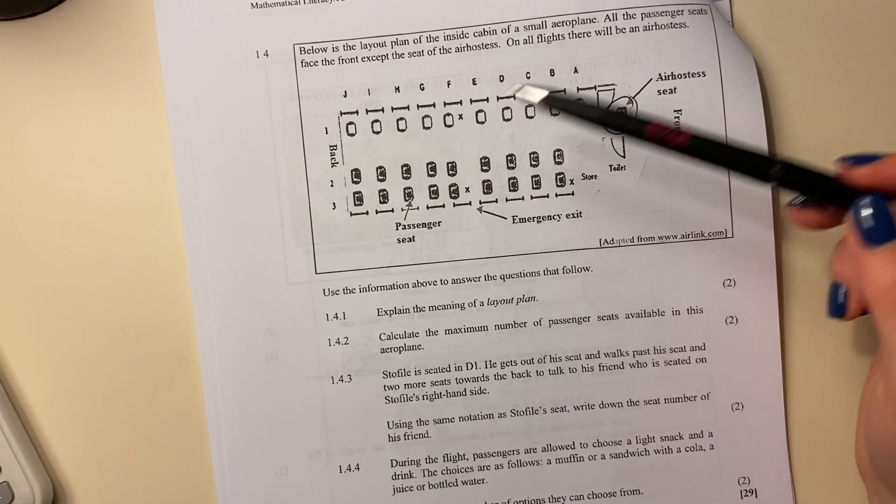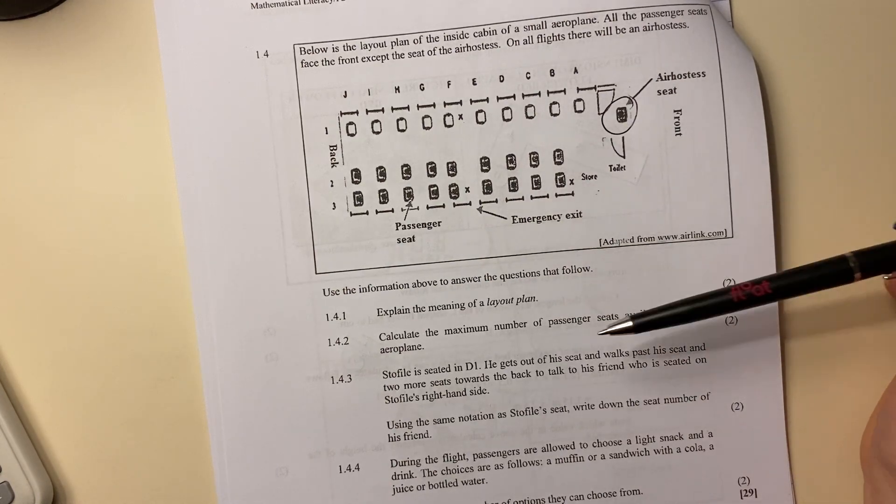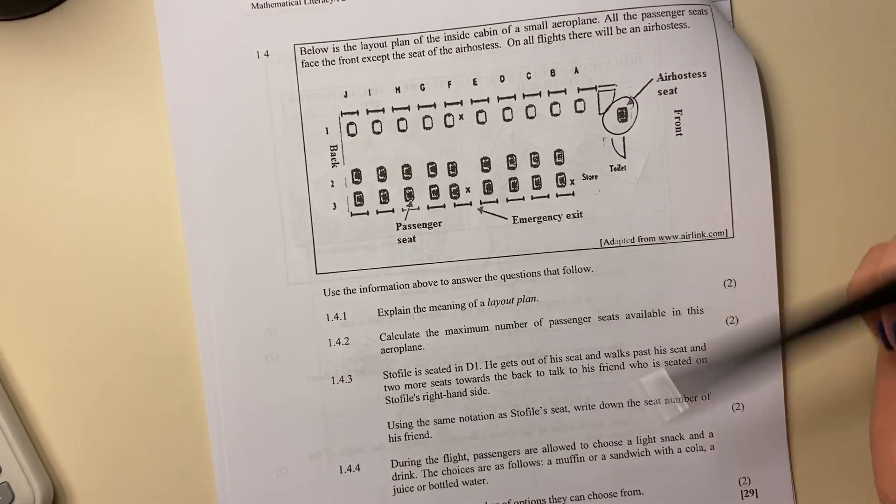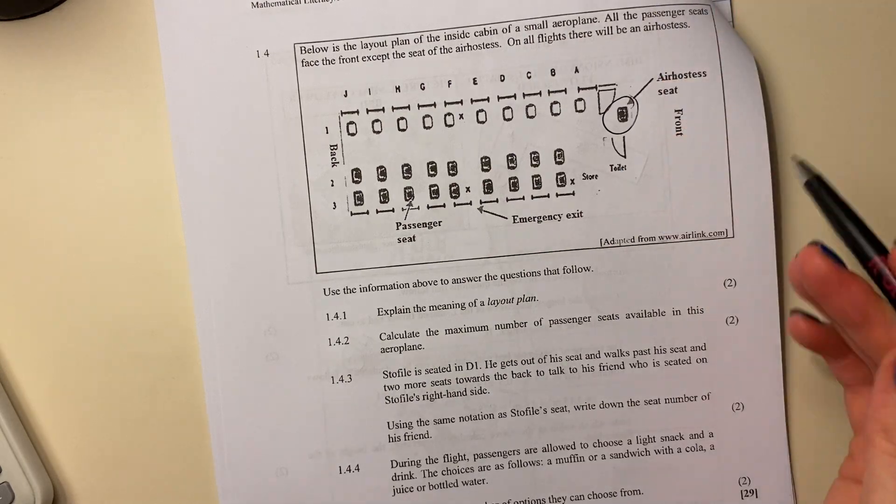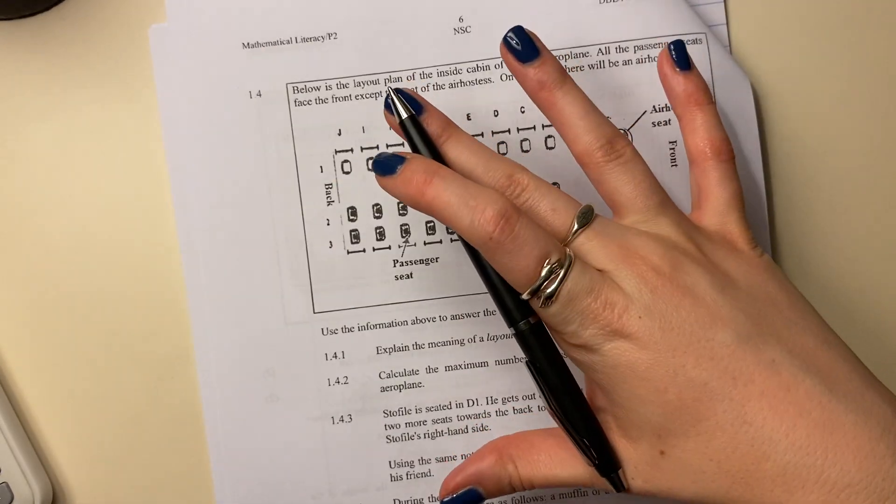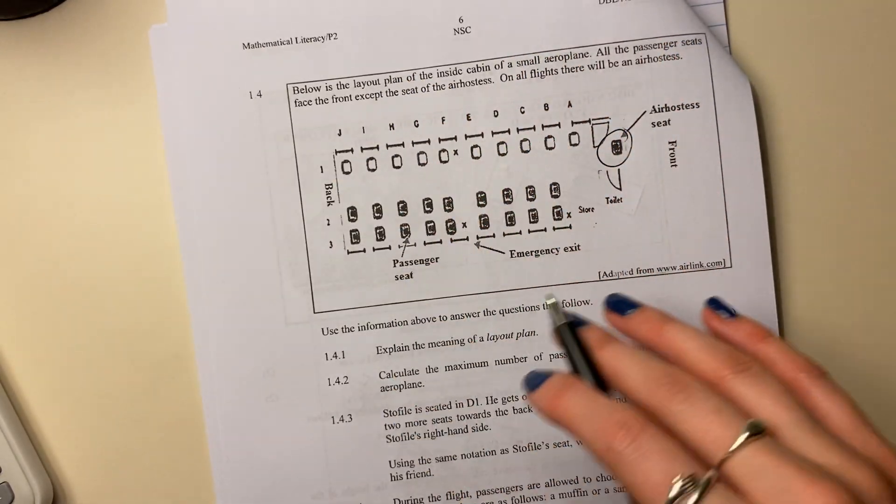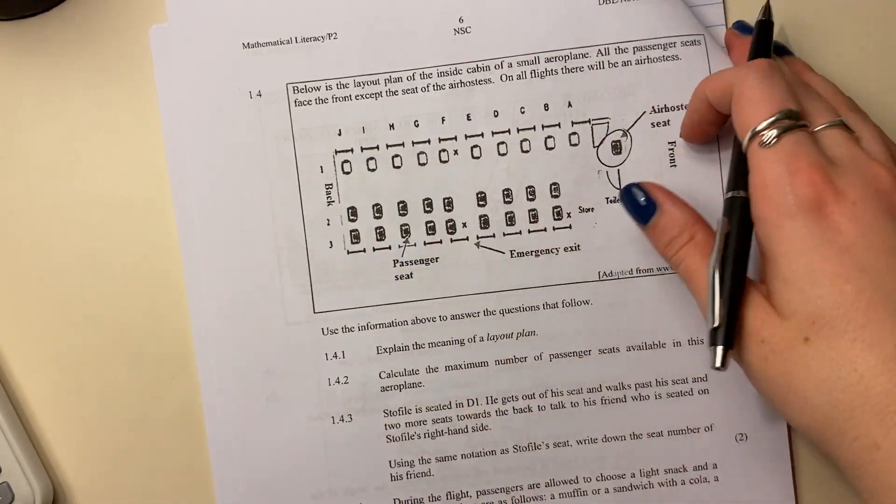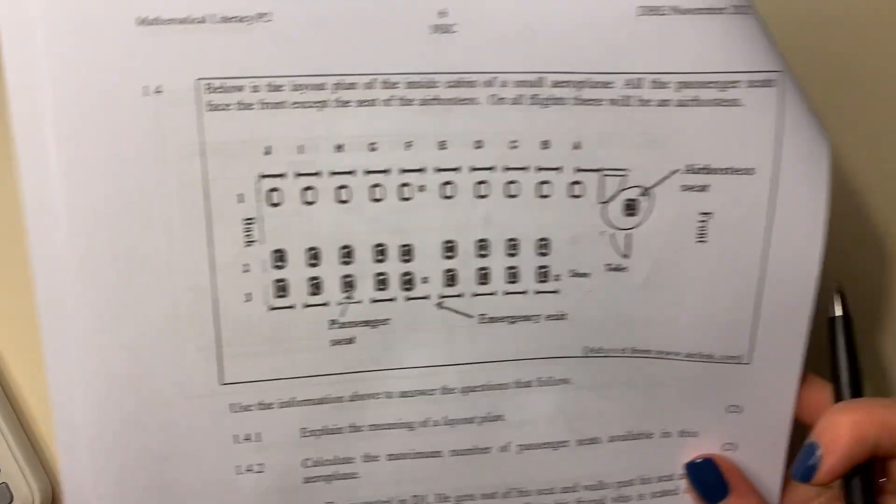Firstly it asks, and this is fairly common, some sort of definition. It says explain the meaning of a layout plan. So this layout plan, what I would say is a top view of the arrangement of the space or the structure of a space, or something along those lines.